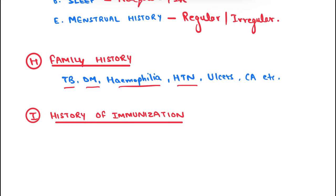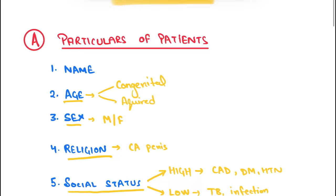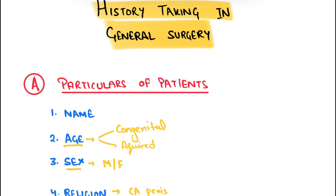Finally, history of immunization: if a child presents to you, ask whether they have been immunized against diphtheria, tetanus, whooping cough, poliomyelitis, smallpox, and TB. This is about history taking in a general surgery ward. Hope you liked this video — please give a thumbs up, share with your friends, and subscribe to the channel for more videos.